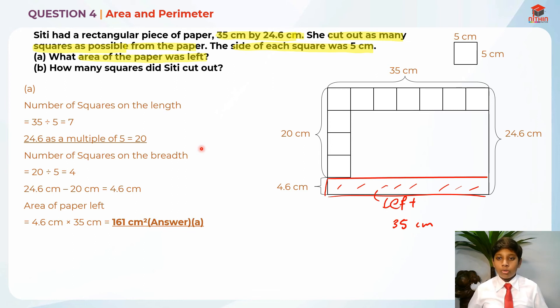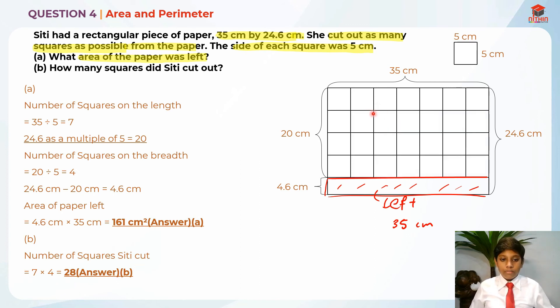Now we can move on to part B. They are asking us how many squares did City cut out? So this is really simple. We know the number of squares on the length and the number of squares on the breadth. So basically in order to find the number of squares cut out, we just need to take the number of squares on the length times the number of squares on the breadth. So it's basically 7 times 4, which is 28. After that, you can check by drawing it in.